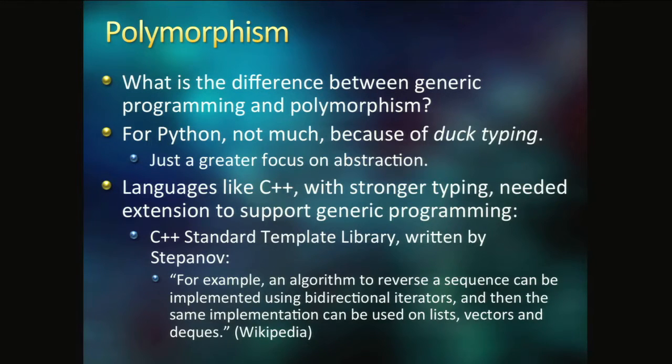Object-oriented languages have polymorphism built in most of them. So if something is of a list type, if it's an ancestor's list, you can pass it anywhere that list is required as a parameter. In C++, Stepanov wrote the C++ standard template library. What it allowed was that you could pass in things that weren't ancestors of a common type as long as they supported the operations that were going on.